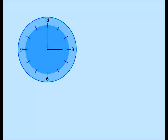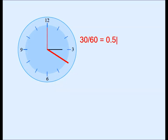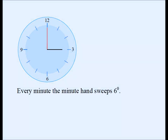Let's do similar math with the hour hand — the black hand. We know that the hour hand sweeps an angle of 30 degrees per hour division, because 30 plus 30 plus 30 makes 90. So the hour hand sweeps 30 degrees every 60 minutes. Take 30 divided by 60 and you get 0.5 degrees. So the hour hand sweeps an angle of 0.5 degrees every minute.